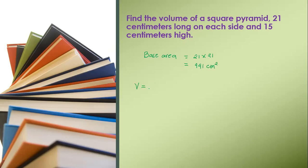The formula to get the volume of a square pyramid is volume equals 1 third times the base area times the height.